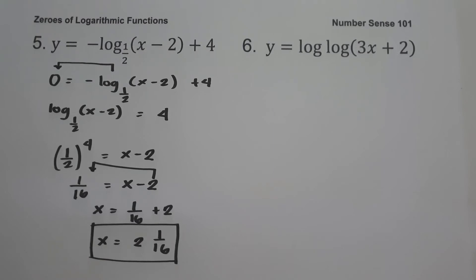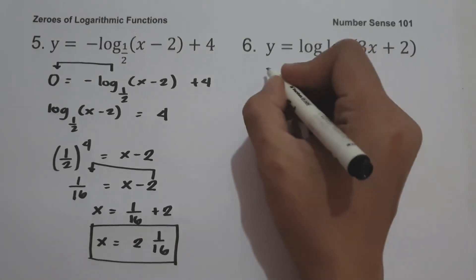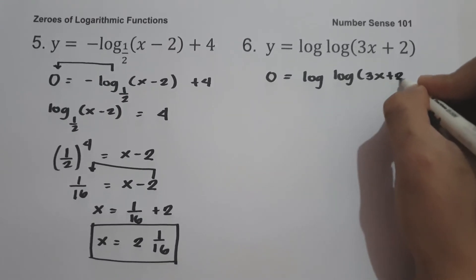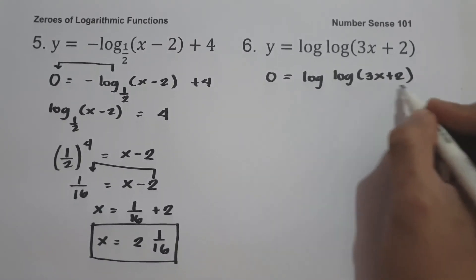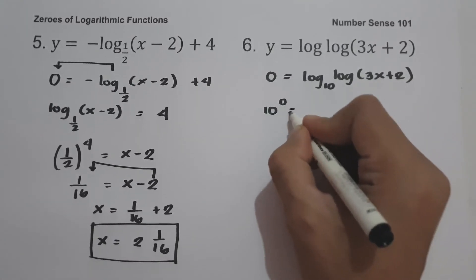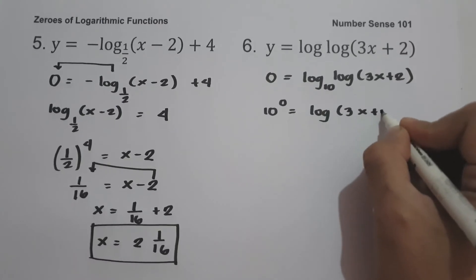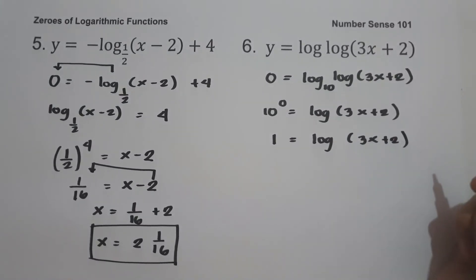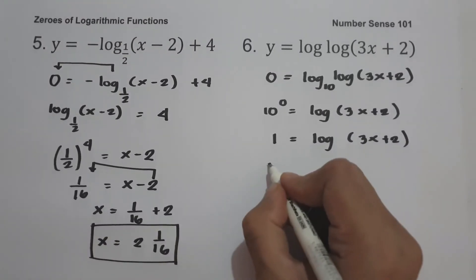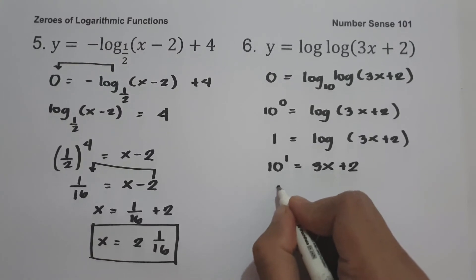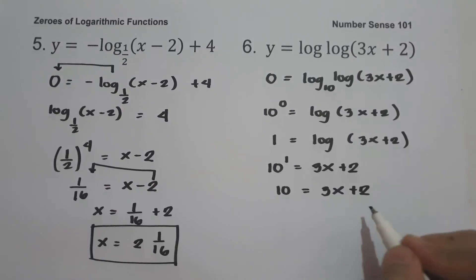On example number six: y equals log of log(3x + 2). To find the zero, let us equate the function to zero: zero equals log of log(3x + 2). Since we have a common logarithm, our base is 10. Converting to exponential form: 10 raised to 0 equals log(3x + 2). Since 10 raised to 0 is 1, we have 1 equals log(3x + 2), and converting again: 10 raised to 1 equals 3x + 2.